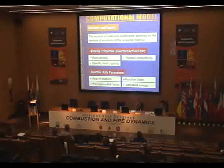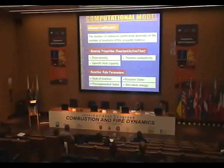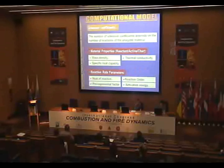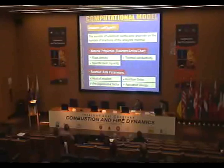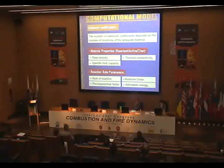Among these unknowns, we include the material properties — mass density, thermal conductivity, and specific heat — for the reactant, the active, and the char material. We also include four parameters of the reaction rate for each reaction, including the pre-exponential factor, reaction order, exponential factor, and activation energy.